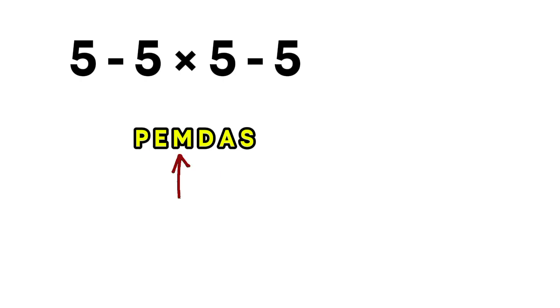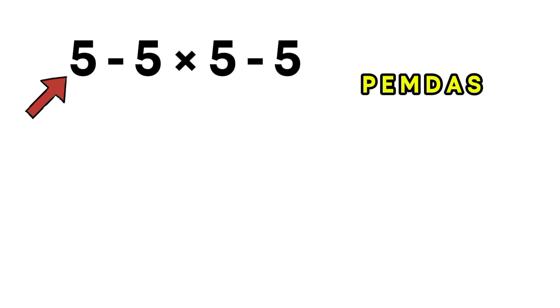Also, remember: multiplication and division have the same priority, and we always work from left to right. In this expression, we have two subtractions and one multiplication, and multiplication must come before subtraction.